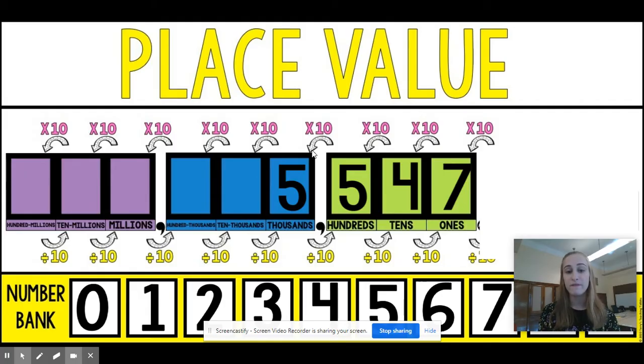So in this example, 5,000 is 10 times larger than 500. So the first five is 10 times larger than the second five.